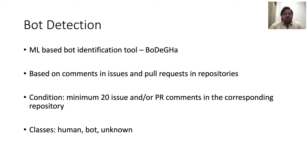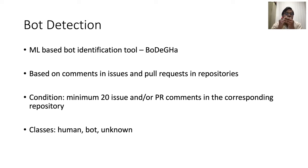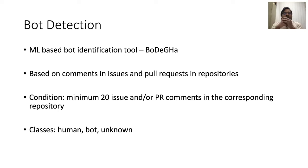For bot detection, we are using the machine learning-based bot detection tool Bodega, developed in our lab. This tool collects comments posted in issues and pull requests in the repositories, takes the account names, and based on the comments posted by each account, determines whether the account is a bot or a human. We require that an account makes at least 20 issue or pull request comments in the corresponding repository to be classified. The tool returns three classes: human, bot, and unknown — where unknown applies when there is insufficient evidence to classify.